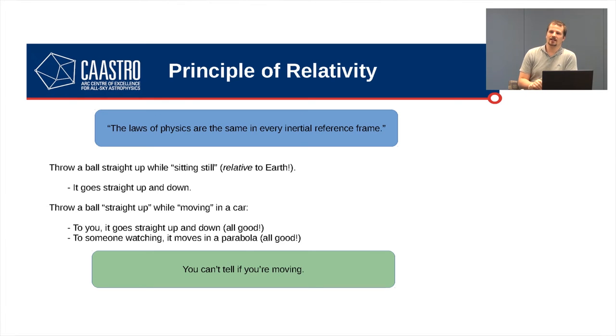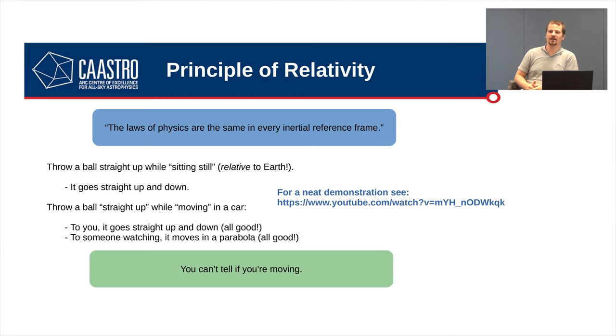And the implication of all this is this simple statement. You can't tell if you're moving. There's literally no experiment that you can design which can tell you if you are moving or at rest. Any experiment you can do, you can define such that everything else is moving and you're sitting still and the equations all work out and everything makes sense. That's quite interesting. Now, if you want to look at a neat demonstration of this ball-throwing parabola thing, look at this YouTube link. Someone does this on a skateboard and shows the ball moving. It's kind of neat.